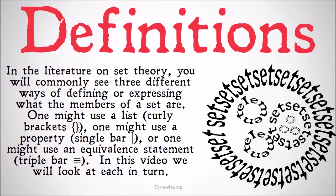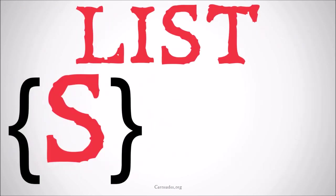In the literature on set theory you will commonly see three different ways of defining or expressing what the members of a set are. Different authors may use particular ones for specific reasons. One might use a list using curly brackets, one might use a property with a single bar, or one might use an equivalent statement and the membership sign with a triple bar. In this video we're going to look at each in turn.